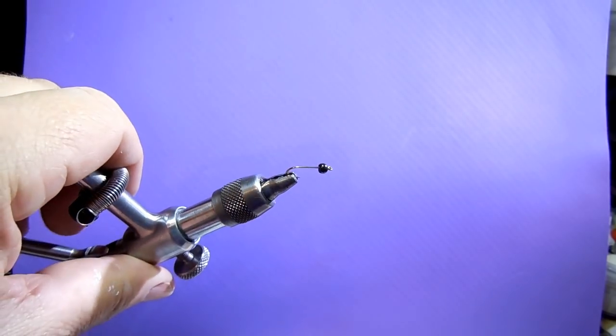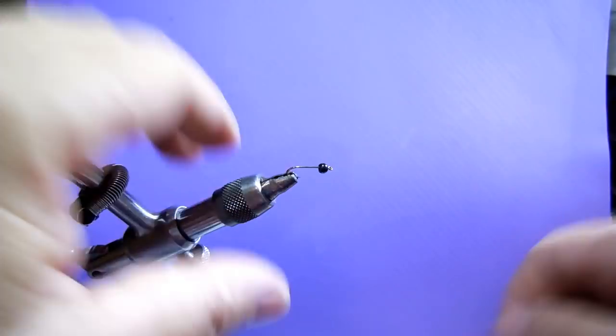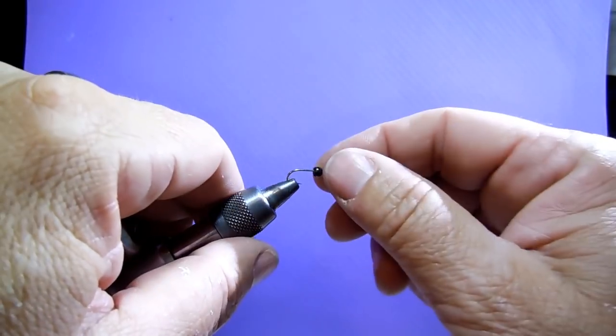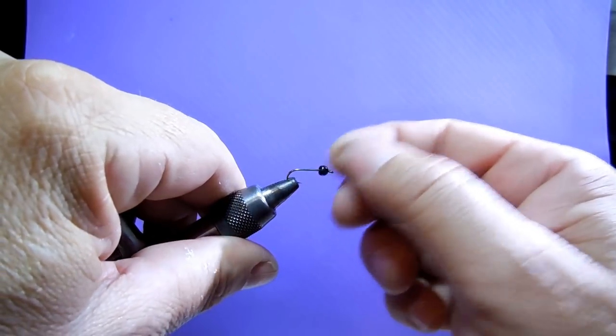G'day. Today we're going to tie a really simple nymph for fast waters, riffles and things like that, where you can get down deep pretty quick. I'm using a tungsten bead on this one.